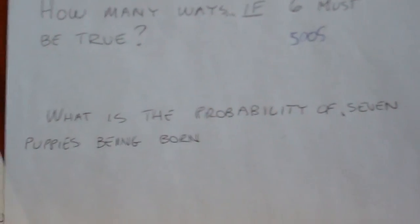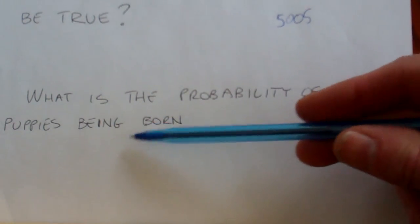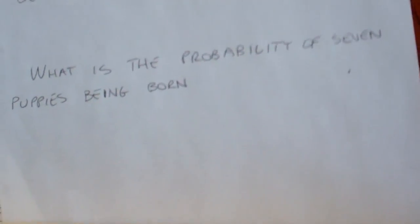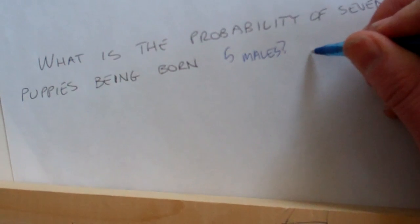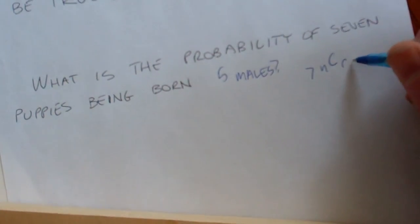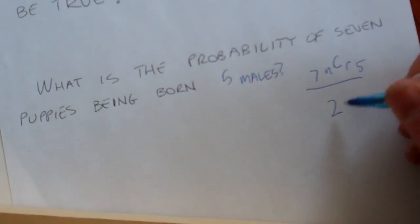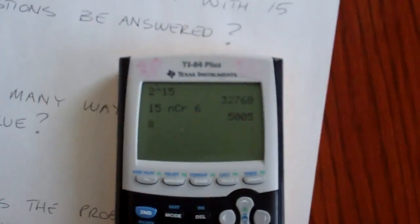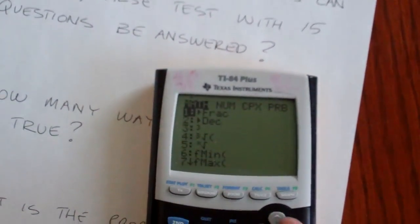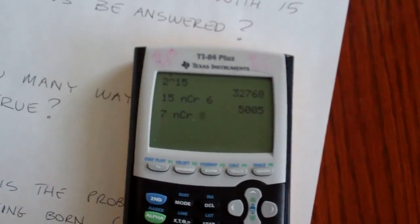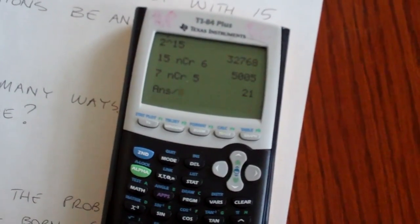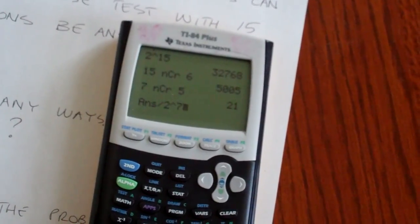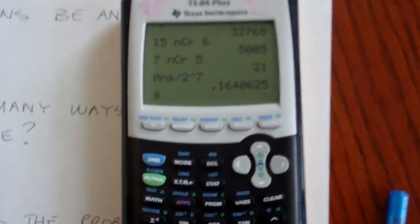Here's one phrased as a probability question: what is the probability of 5 male puppies being born out of 7 puppies? That's just 7 NCR 5 divided by 2 to the 7th. We can do that all in one go on the calculator — type 7, then Math over to PRB, choose option 3, then 5. There are a total of 21 ways, divided by 2 to the 7th. That's about 16.4%. That's how you do it.